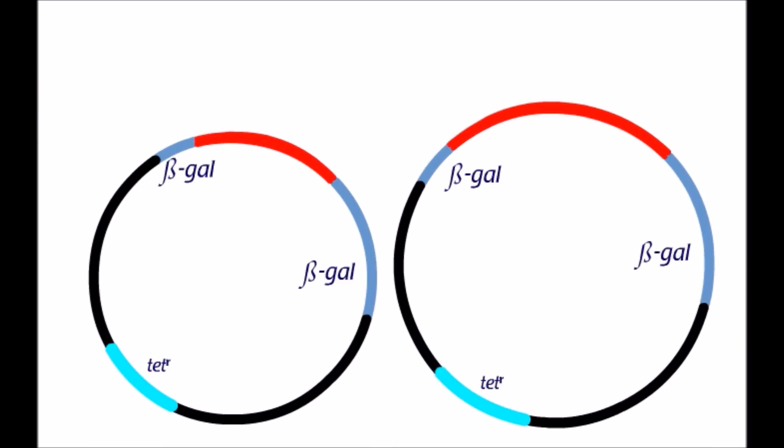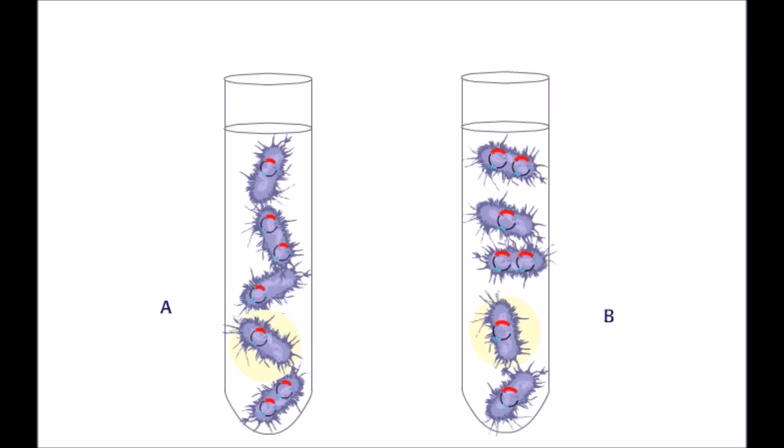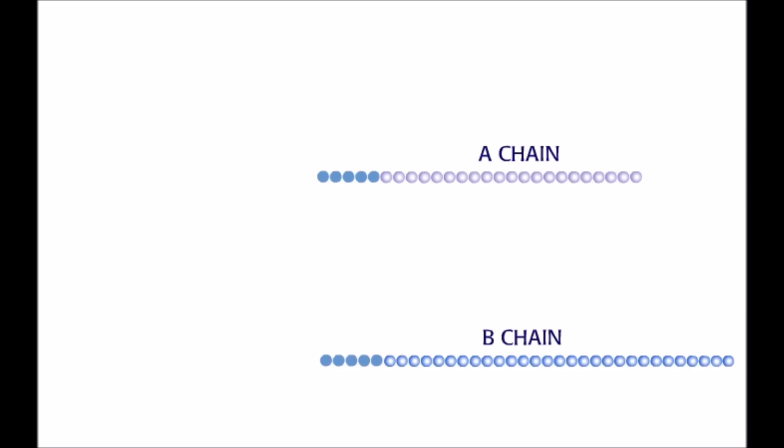Tetracycline is added to kill off any untransformed bacteria. The transformed bacteria are grown, then beta-galactosidase and insulin fusion protein is harvested and purified. The beta-galactosidase part of the protein is cleaved off and discarded.